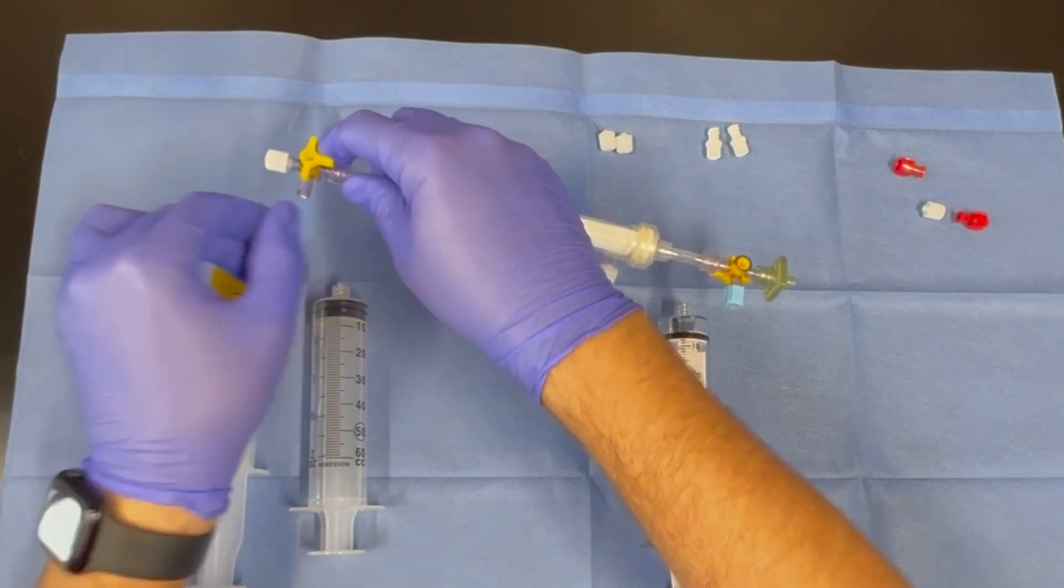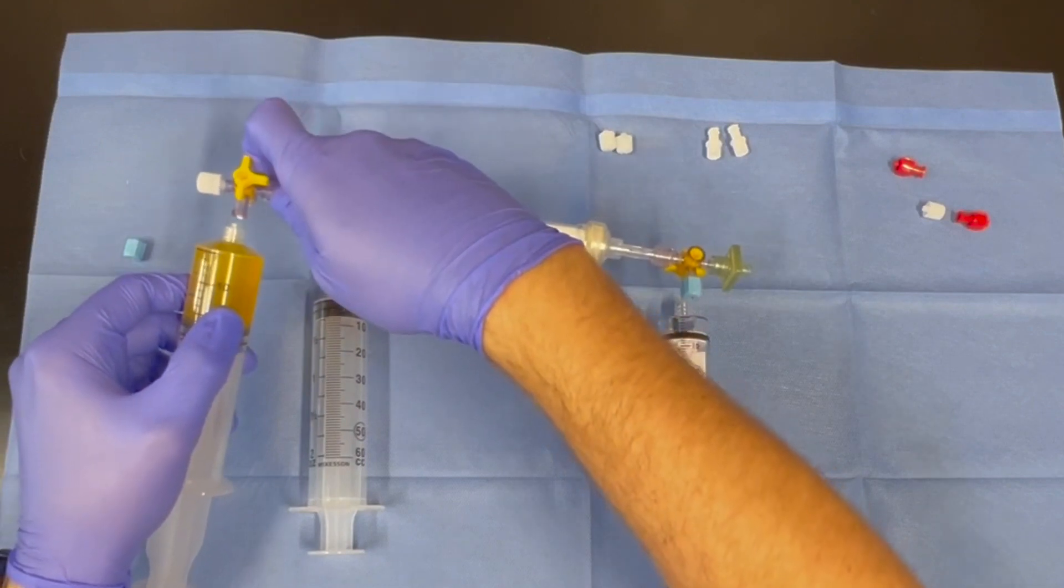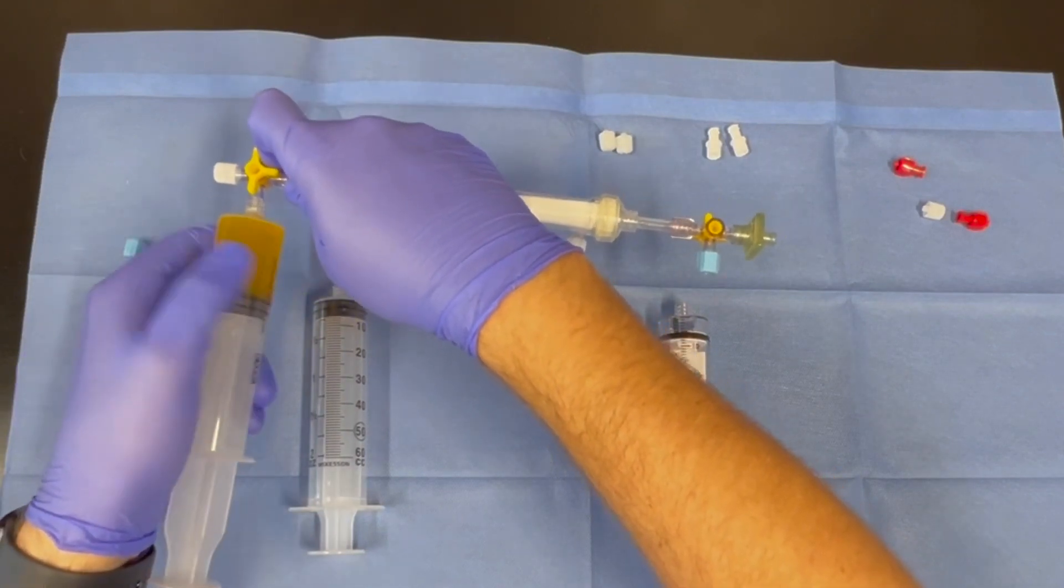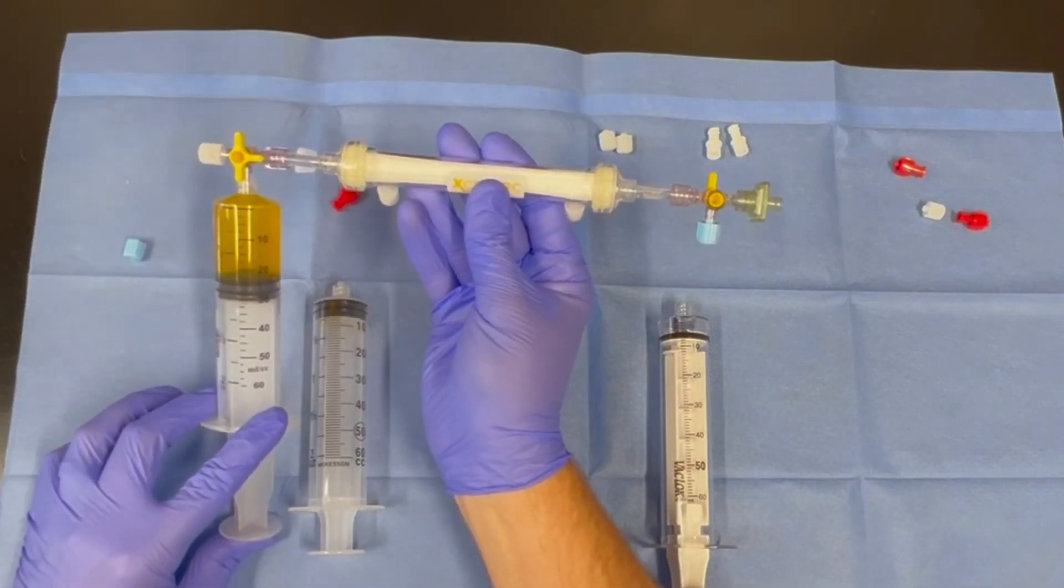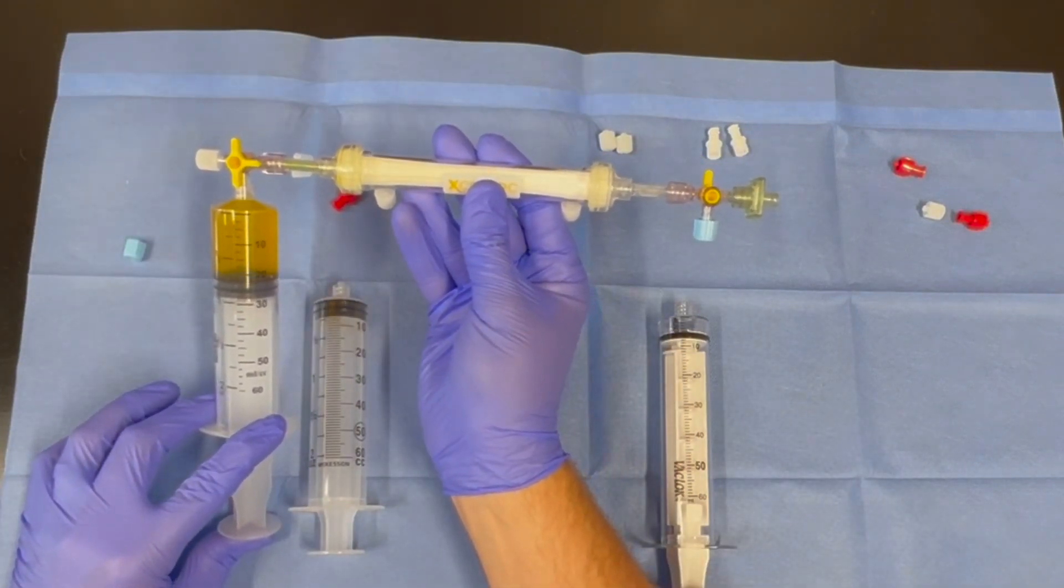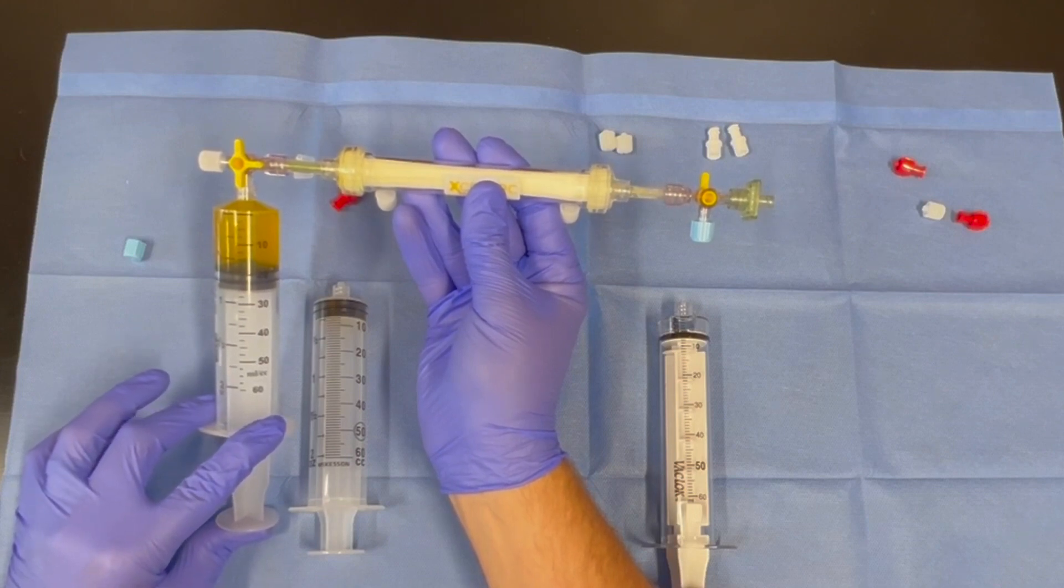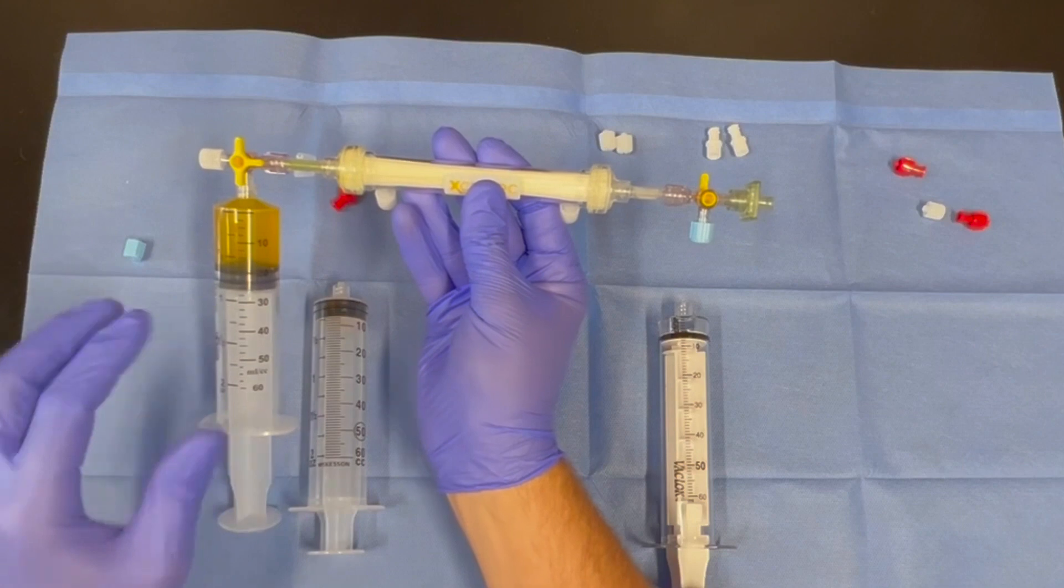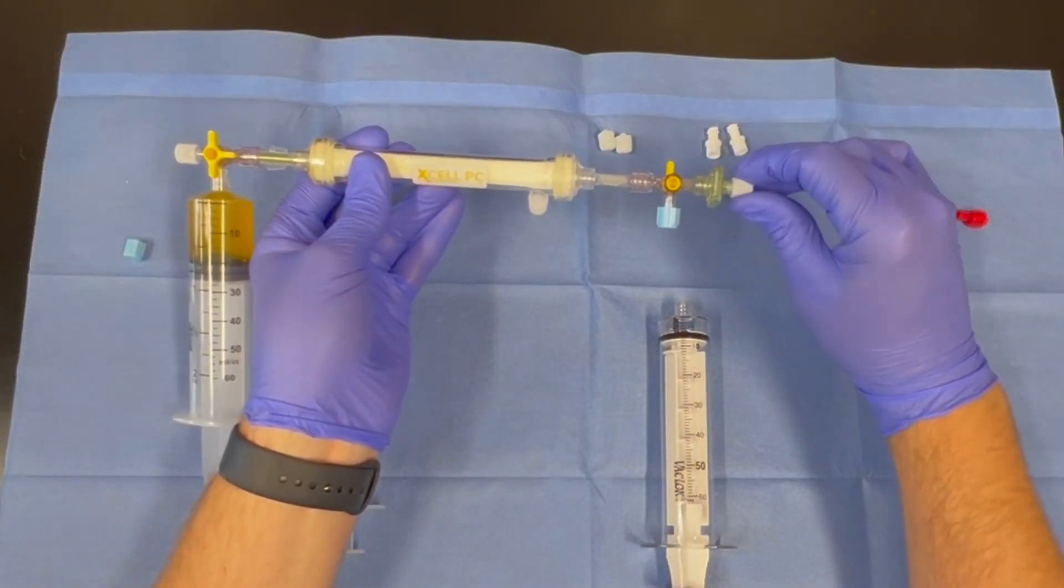Remove the blue cap and attach the 60 ml syringe with the platelet-poor plasma. Push any remaining air in the platelet-poor plasma through the main filter and out through the green filter. Once the air has all passed through, the plunger will no longer advance. At this time, recap the green filter.